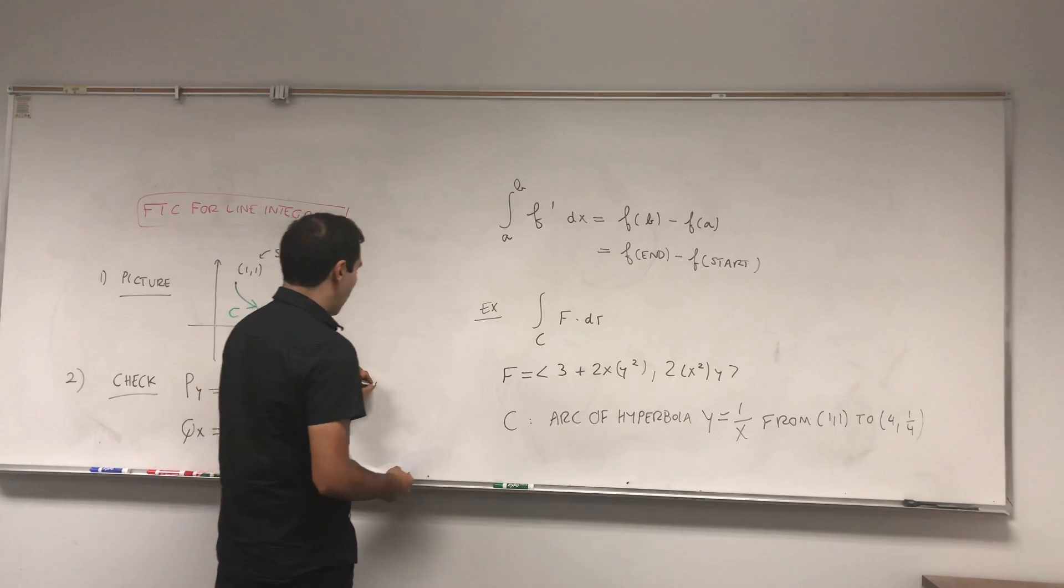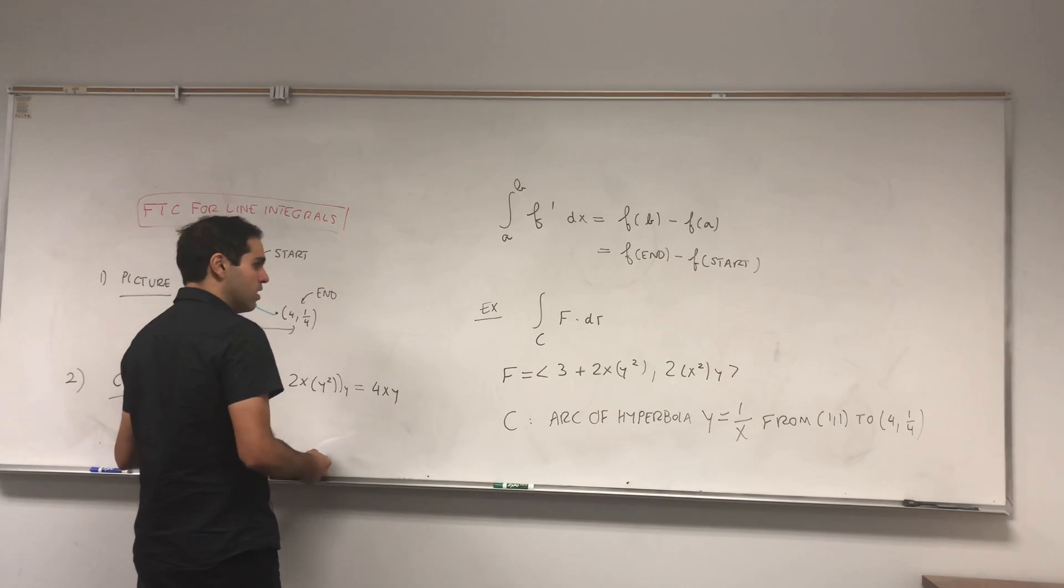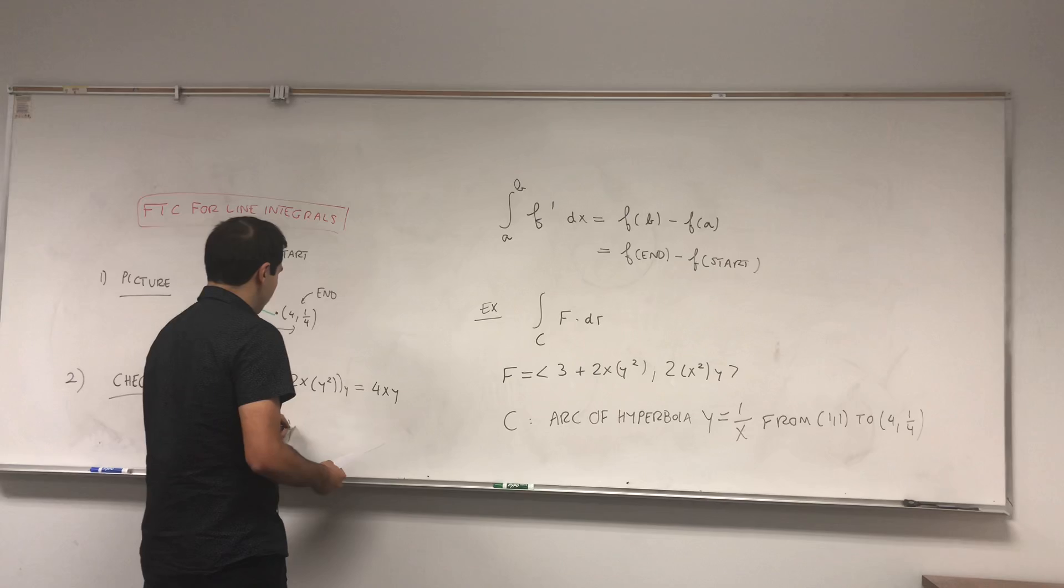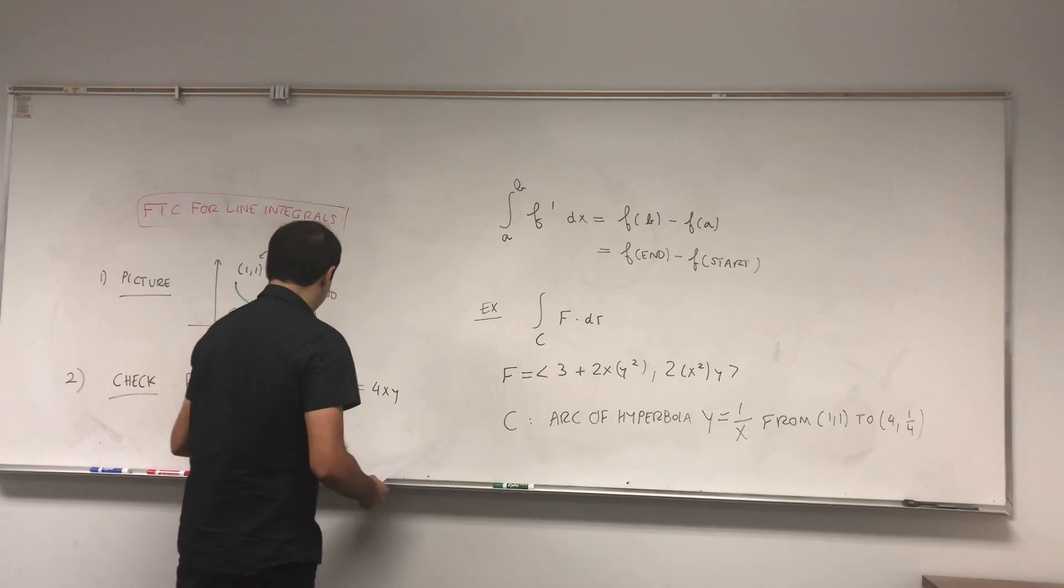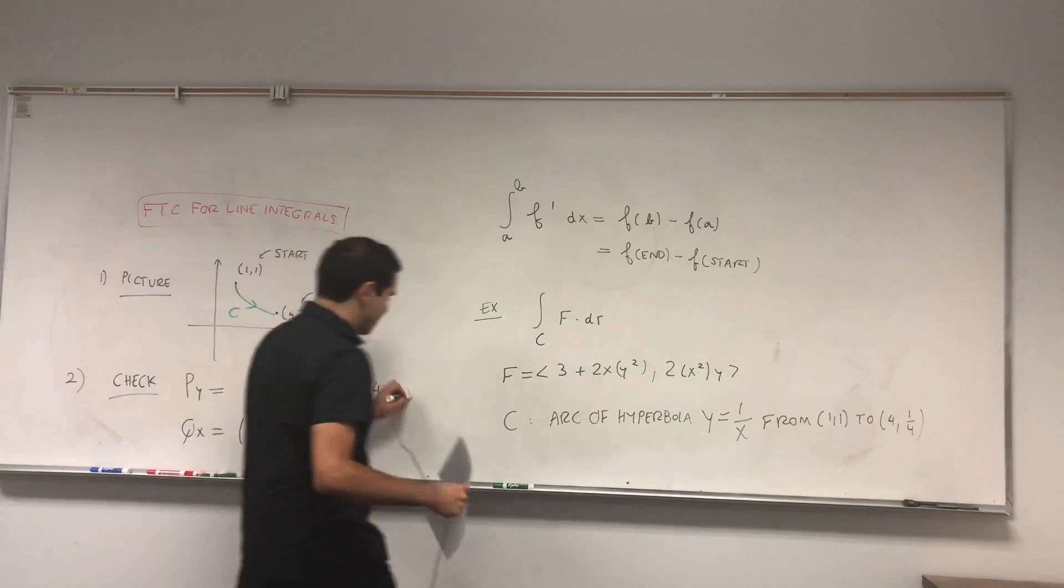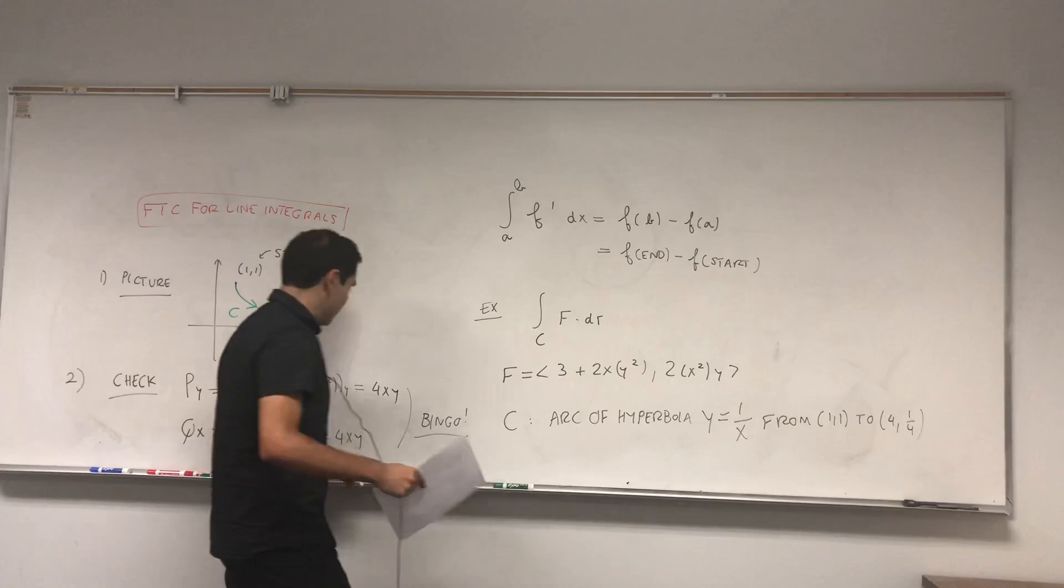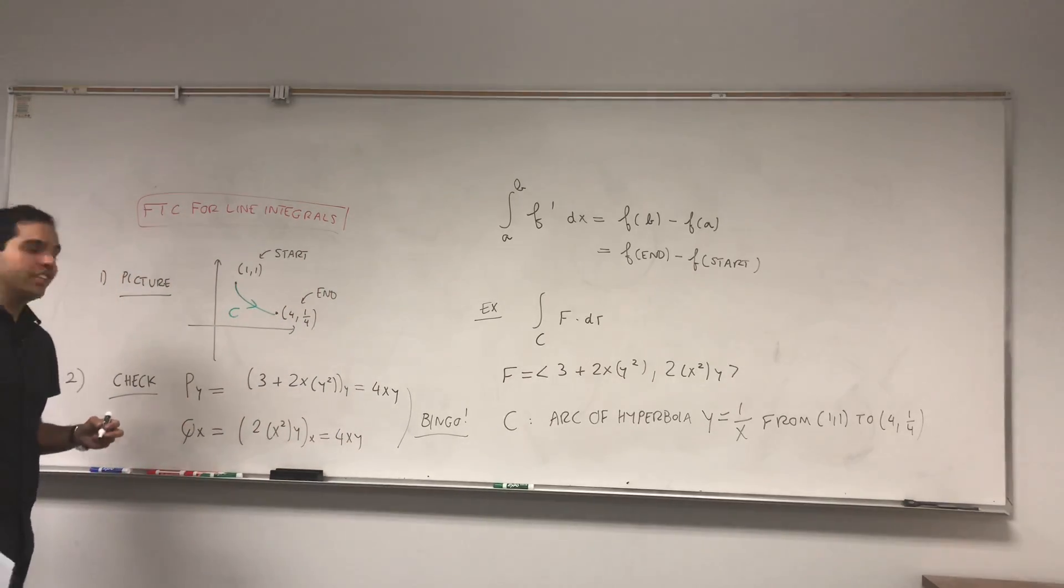This disappears, you get 2x times 2y, so 4xy. And then this one, so quixotic, 2x squared y with respect to x, and that's also 4xy. And it works! Bingo!